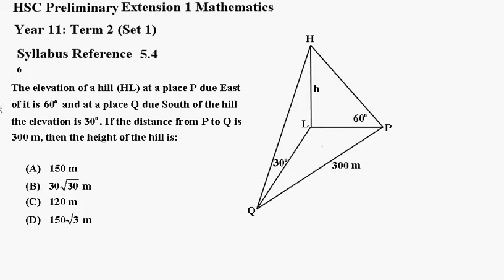Now we note that this angle in here is going to be 90 degrees, because that's east and that's south. Now let's get this PL in terms of H. We can see that H on PL is equal to the tan of 60.